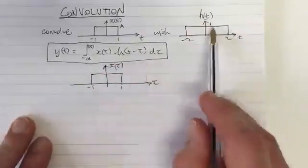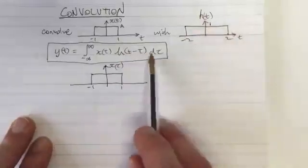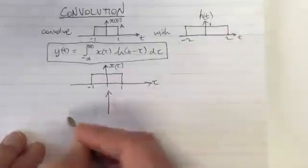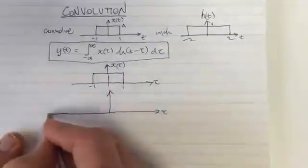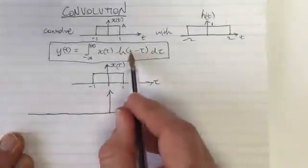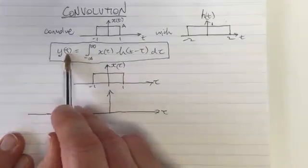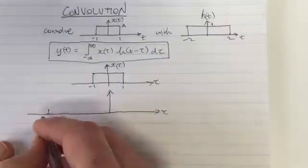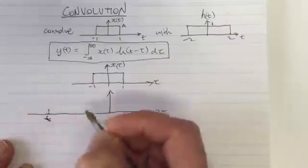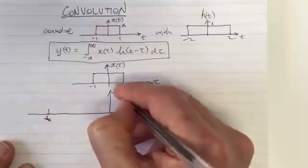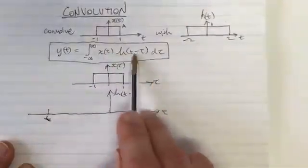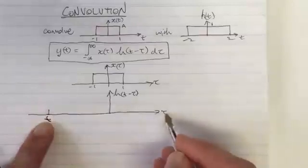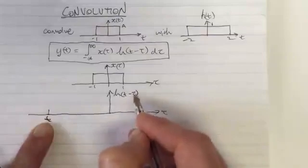The other function we need to multiply by is related to h(t), but it's a shifted version, and we're plotting with respect to τ. h(t) was plotted with respect to t — we now need to plot it with respect to τ. I'm going to pick a particular value of t to start with, one that is quite negative, and plot h(t minus τ). To find where things land, I look at what happens when τ equals t: we get h(0).